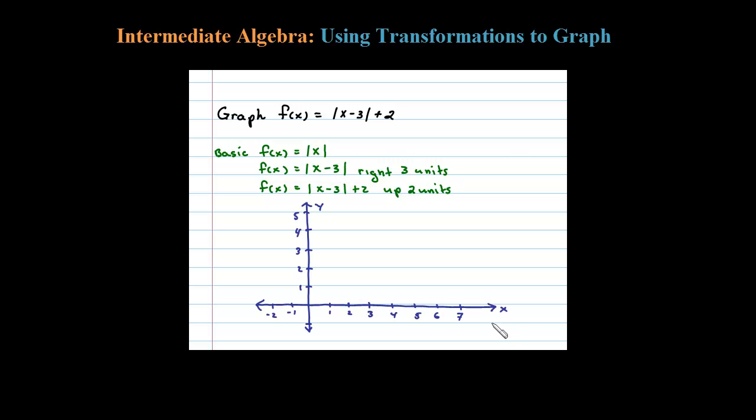Here's a Cartesian coordinate system. Now let's first graph, using a dotted line, our basic graph y equals the absolute value of x. And here that is, notice the vertex there at 0, 0, 1, 1 is a point there, negative 1, 1.